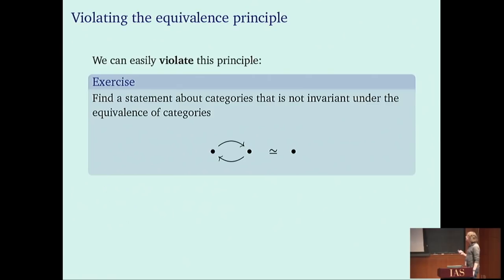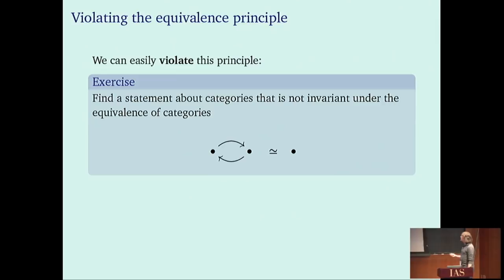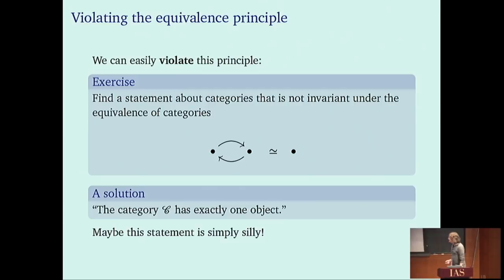In classical mathematics, the equivalence principle is not enforced, so we can easily write statements that are not invariant under the correct notion of sameness. For instance, can you find a statement about categories that is not invariant under equivalence — true for one category but not the other? The answer is the number of objects. One could say this is not a very mathematical statement, and mathematicians would not generally be interested in counting the number of objects in a category.